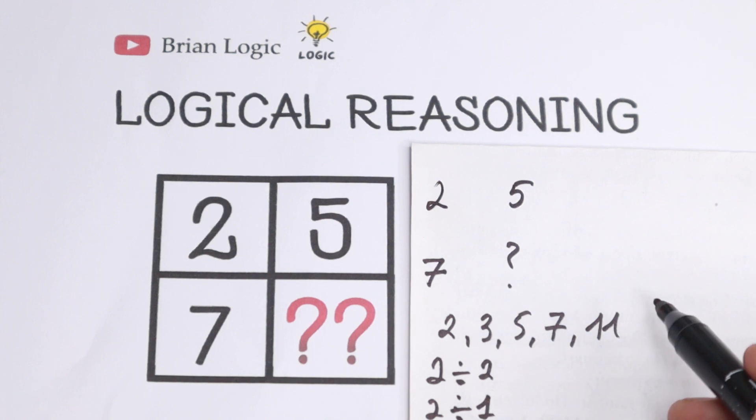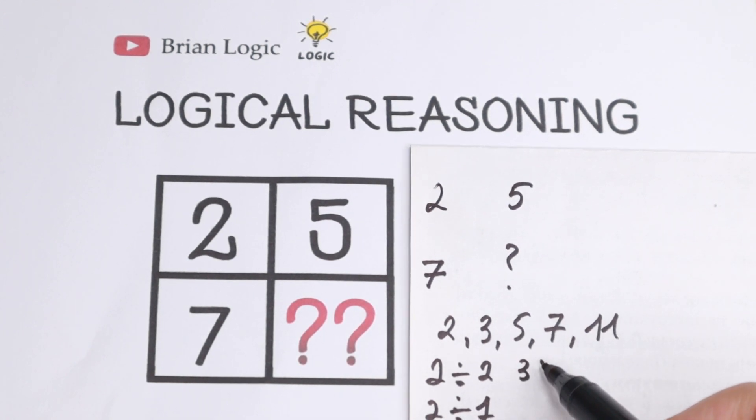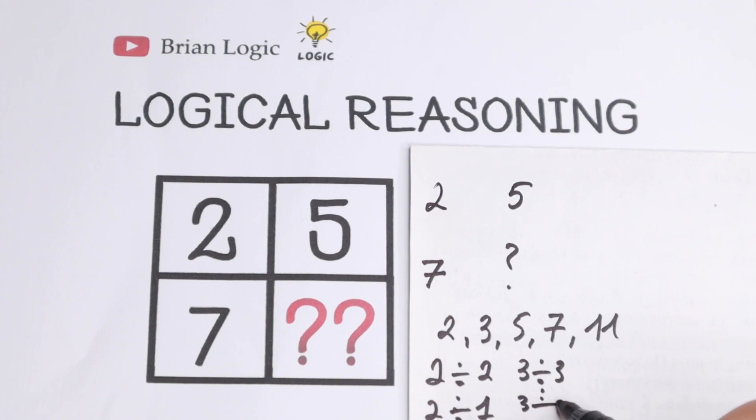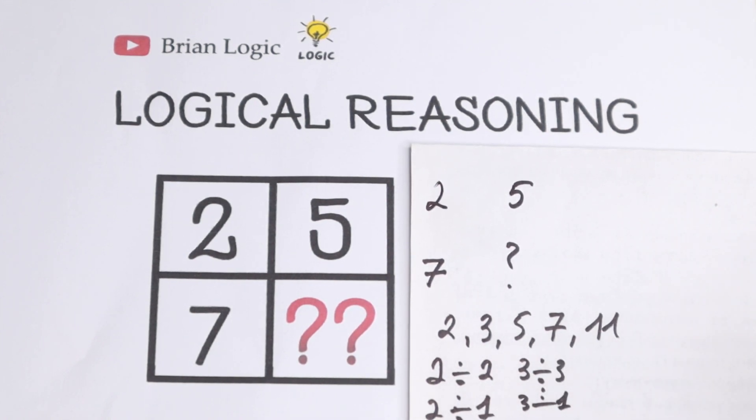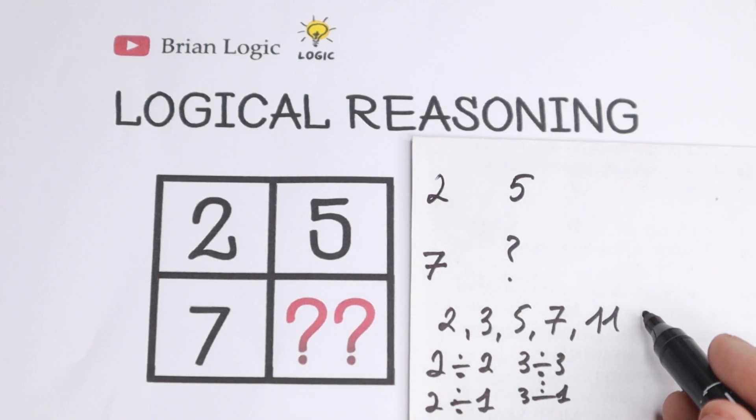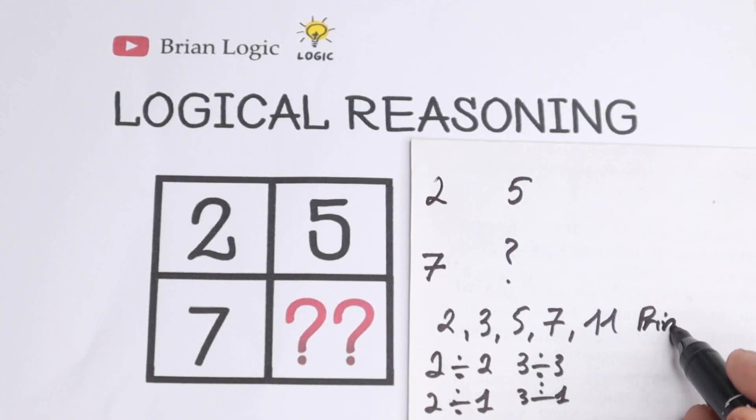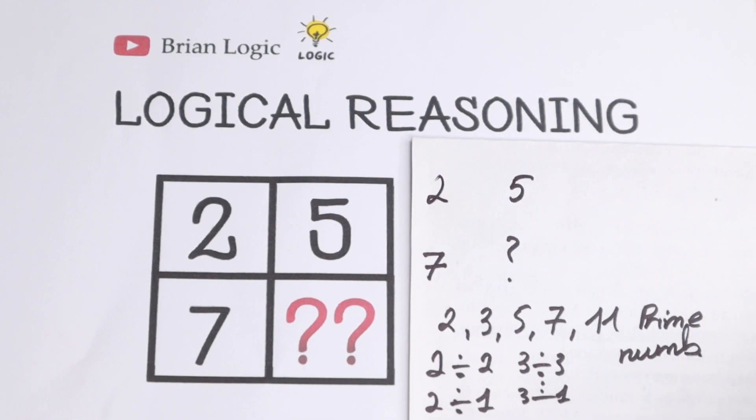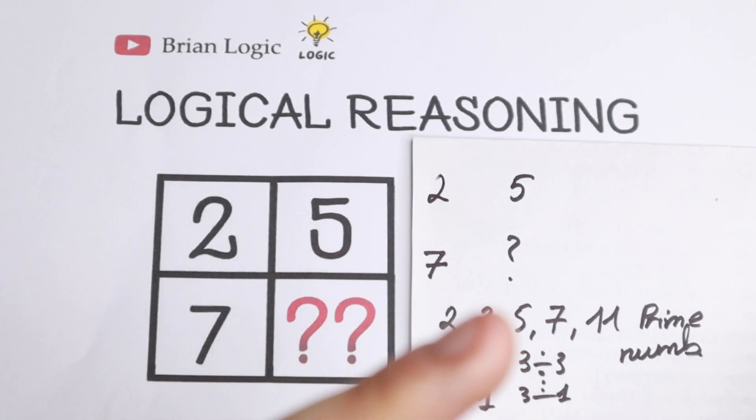Right here 3 can be divided by 3 and by 1 only. And right here with the 5 and 7, this is the same case. So these are prime numbers. But what do these prime numbers tell us?